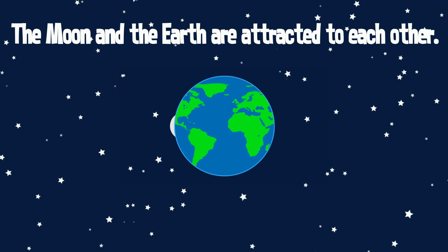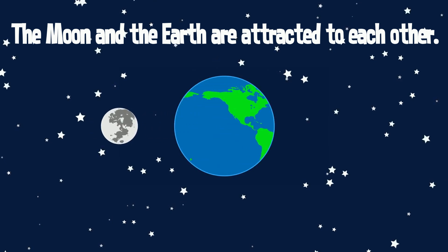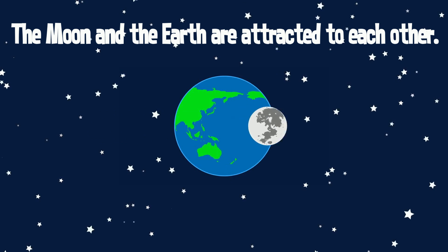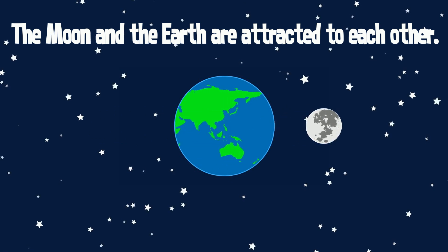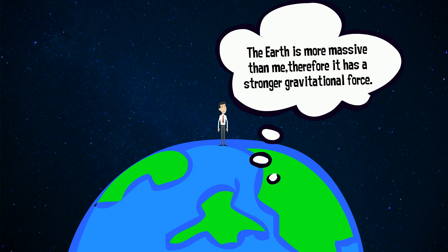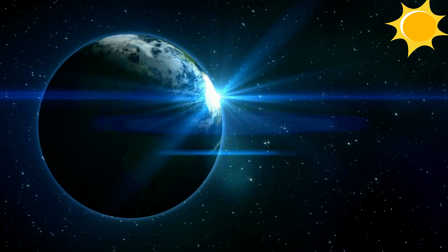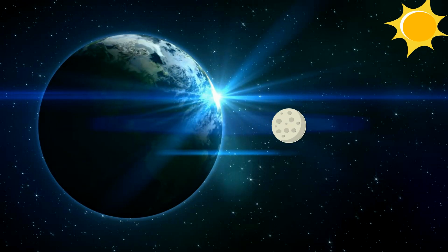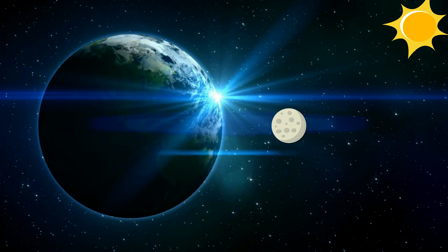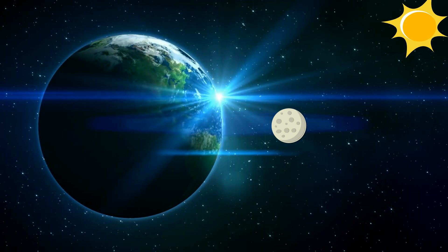Gravity is the force of attraction between two objects. Anything that has mass also has a gravitational force. Objects with more mass have a greater gravitational pull. Gravity also gets weaker with distance, so the closer objects are to each other, the stronger their gravitational pull is.